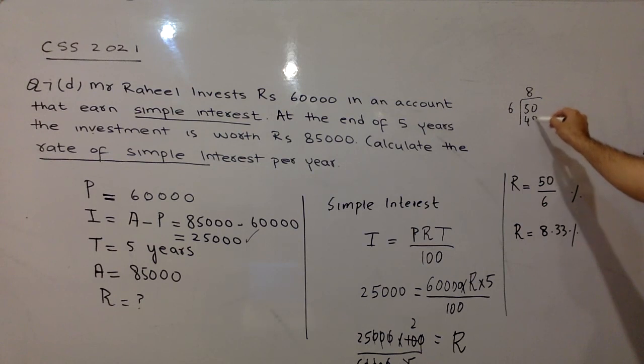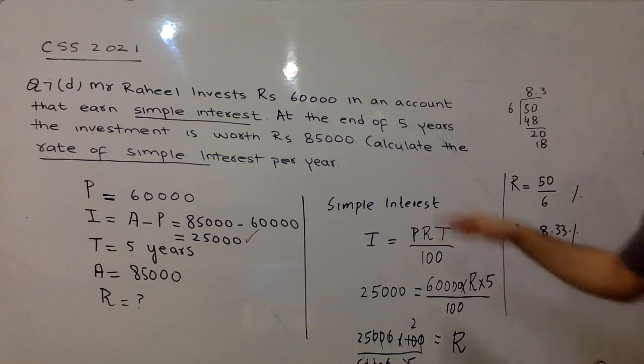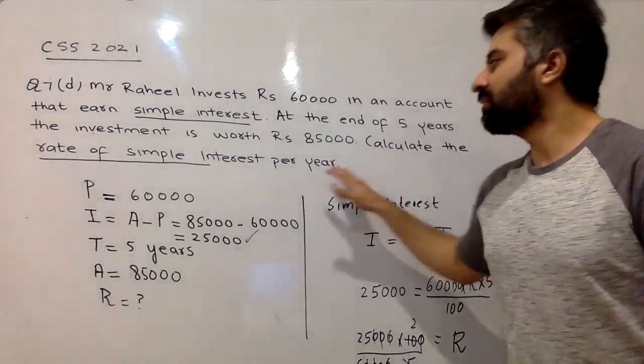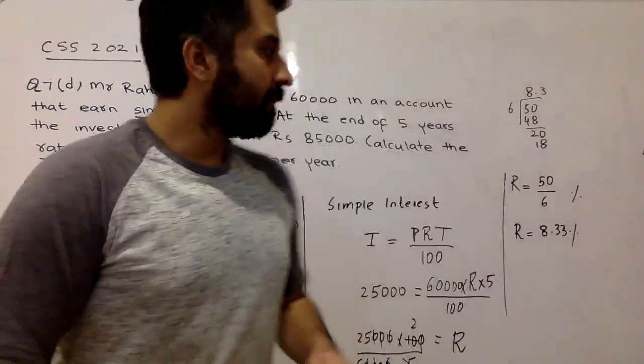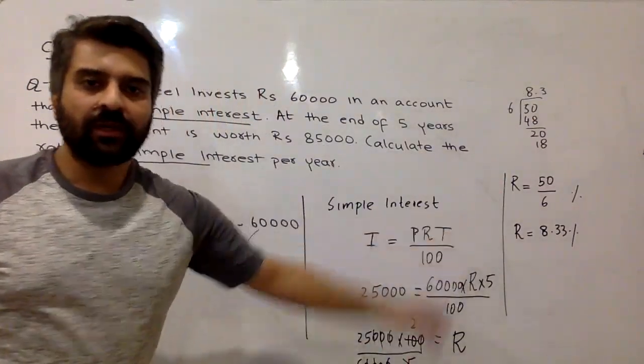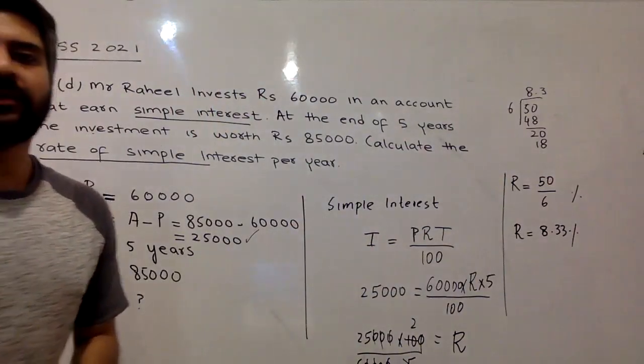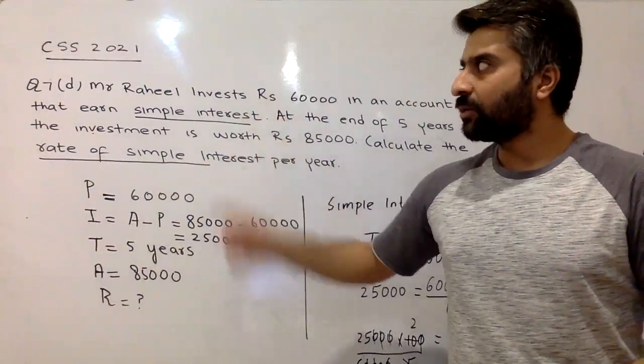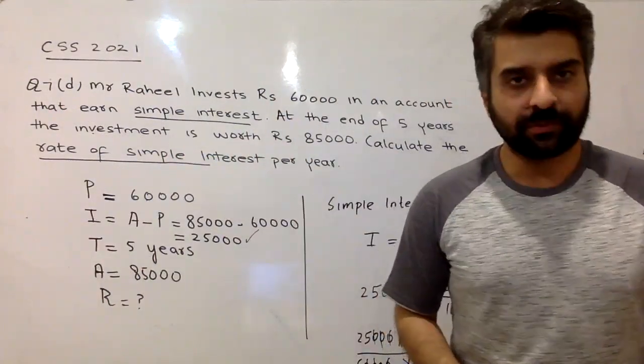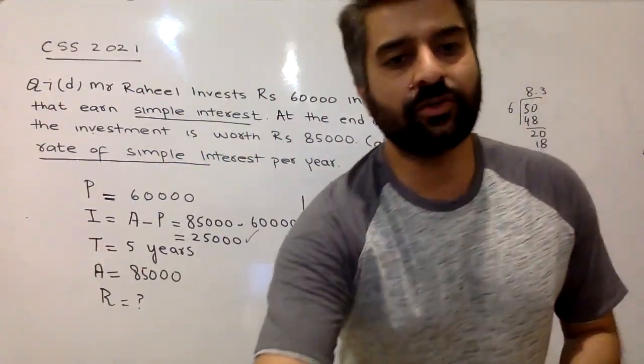Your rate of interest is 50 divided by 6: 6 eights are 48, the remainder is 2, decimal point, zero, 6 threes are 18, and so on. So 8.33% is the rate of interest which was asked in the question, calculate the rate of simple interest. So answer is 8.33%. I hope this question is quite clear, and in the next lecture I will upload the remaining part of CSS 2021 paper. So keep watching and thank you so much.